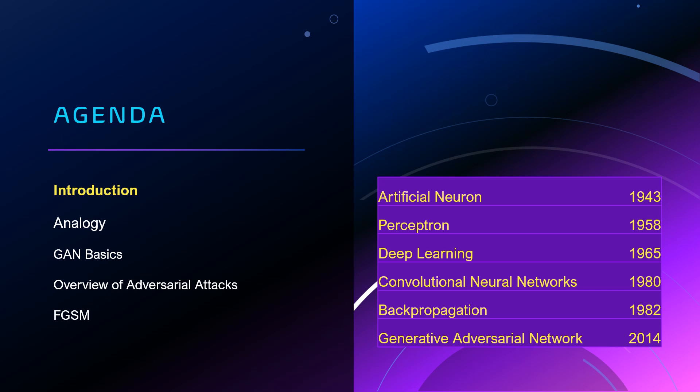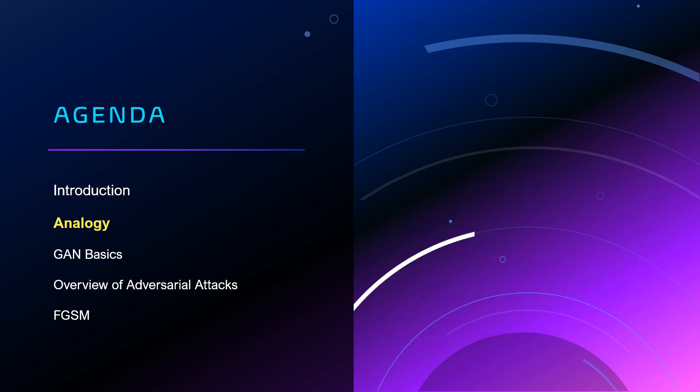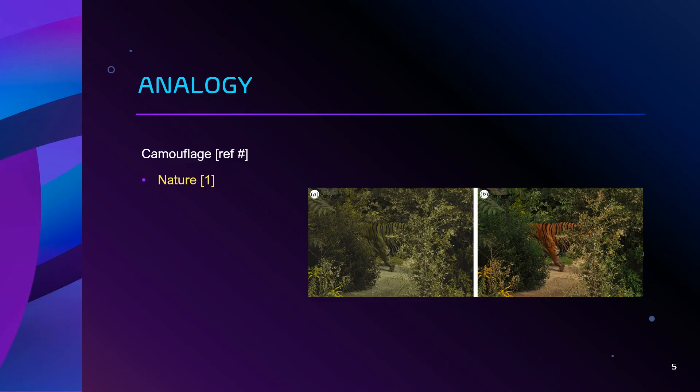GANs involve training two models against one another. Because computer vision is ultimately related to human vision, but not quite the same thing, it's apt to use an analogy of ways that we can confuse human eyes. Camouflage offers a pretty good analogy because it does, in fact, confuse human eyes. To my eyes, a tiger seems poorly camouflaged against a background of green foliage. This is partly because, through natural selection, there was little pressure to select traits that hide well to eyes that can tell the difference between orange and green.